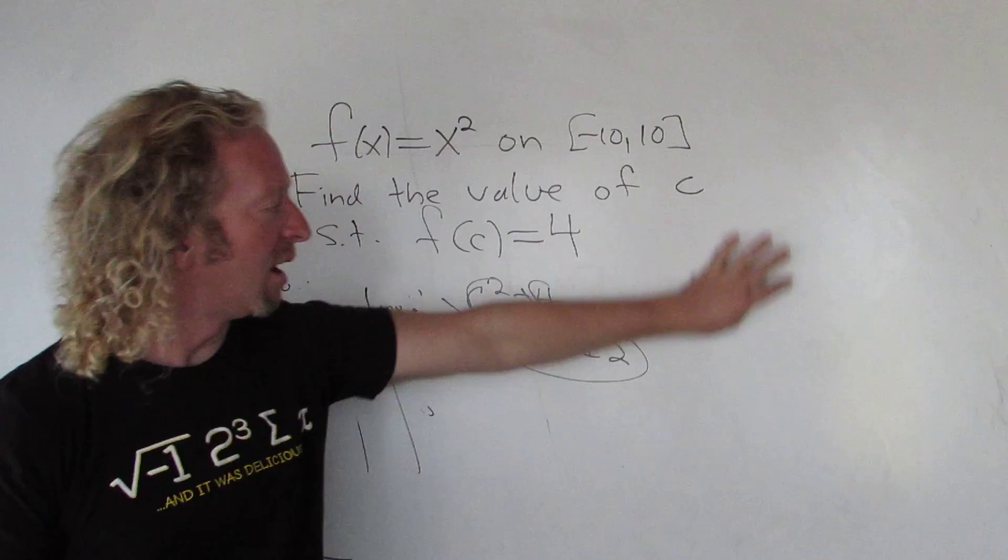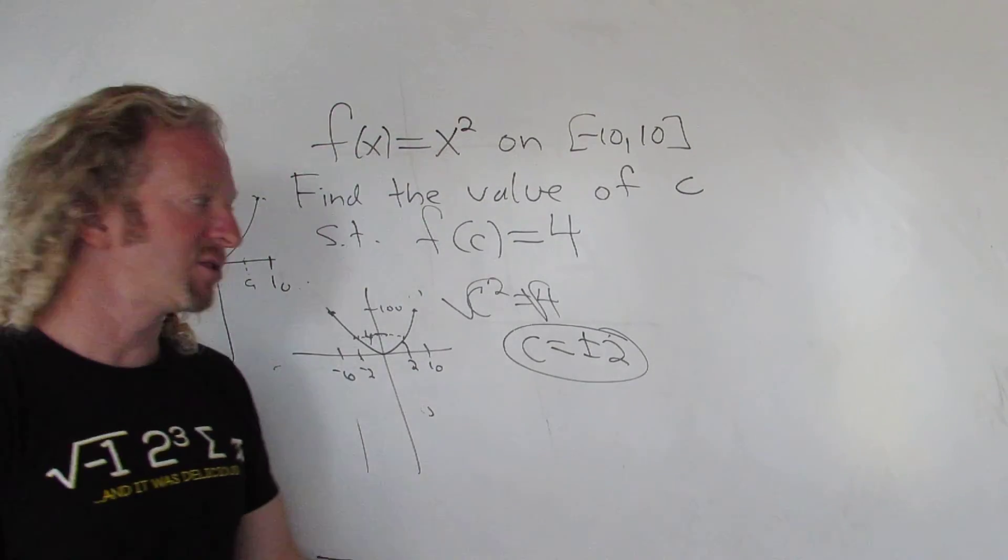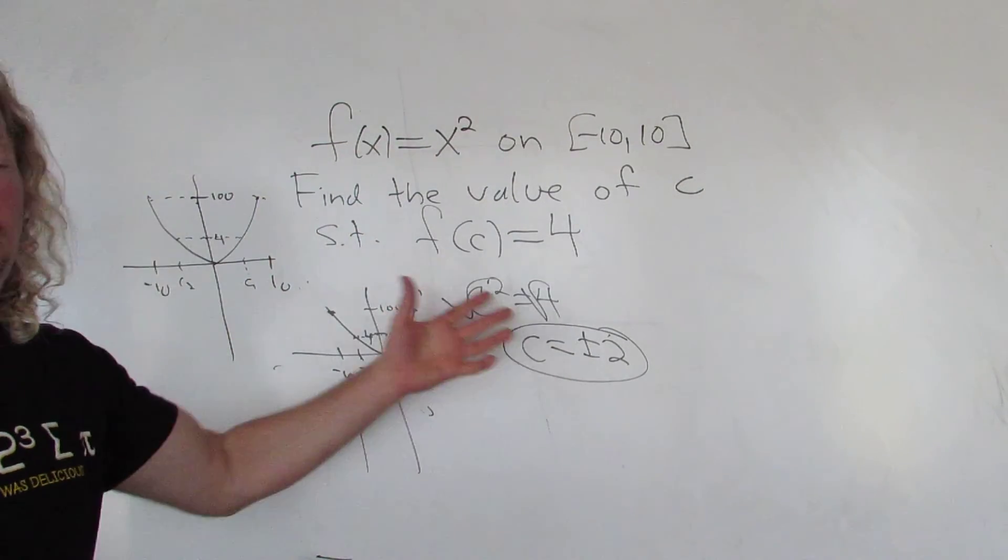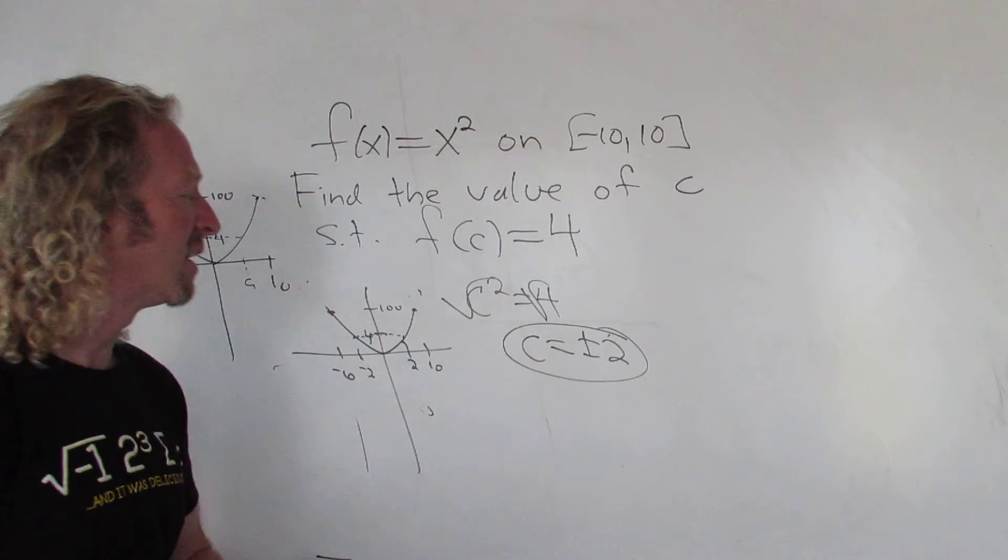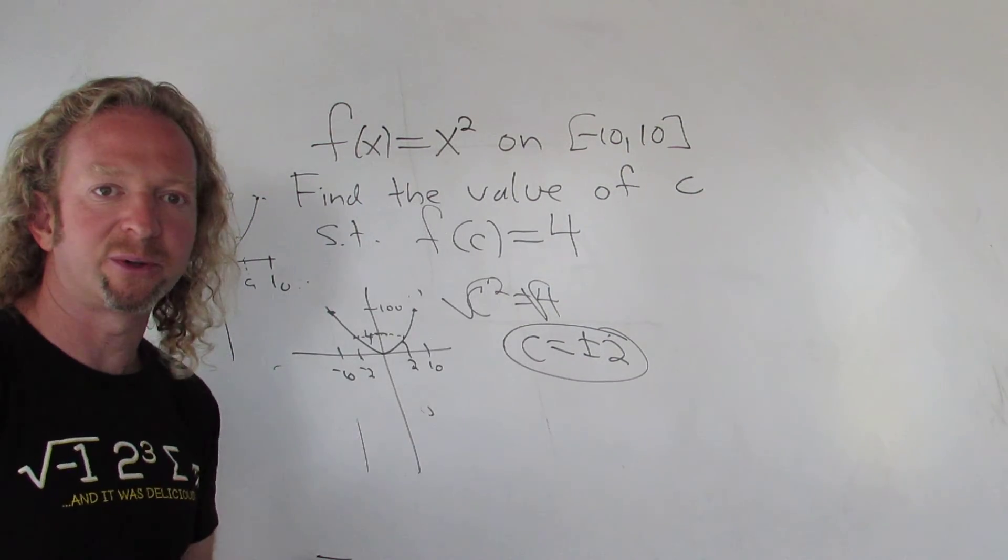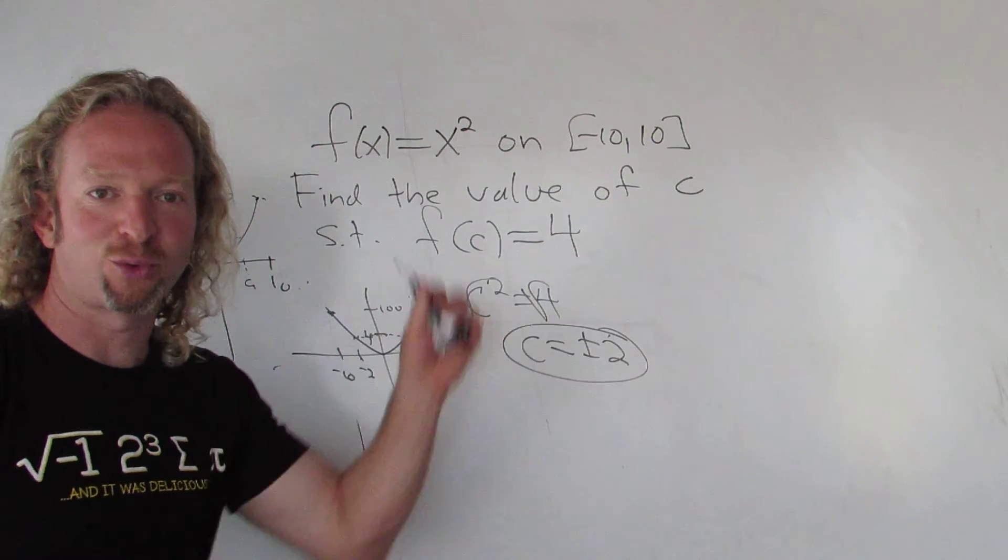So that's the Intermediate Value Theorem. I hope that made sense. In the videos that follow, you'll have better examples, more interesting examples. I just wanted to do a simple example to show you how to do it. Thanks for watching.